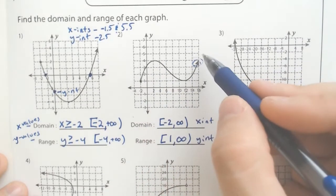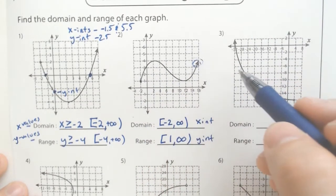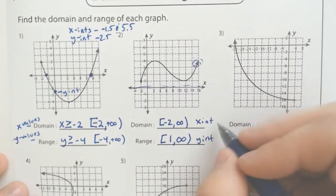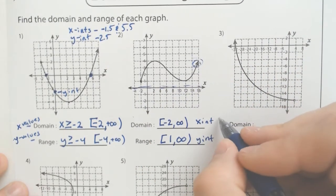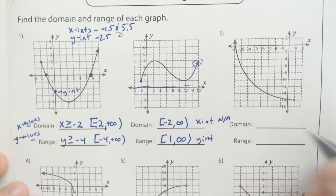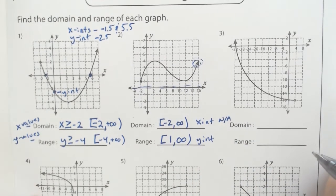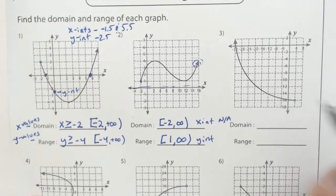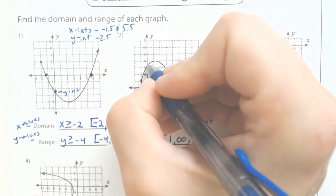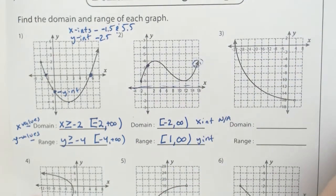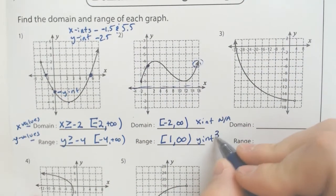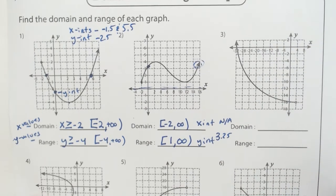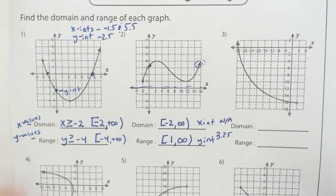Does it have any x-intercepts? Well no. Look at it. It doesn't ever cross this x line so you don't have any. You can write N/A or none or empty set or no solution perhaps. But y-intercept looks like it's just a hair over 3. We don't know exactly what it is but I'm going to say 3.25. It doesn't look like it's quite at 3.5. All right so let's move on.